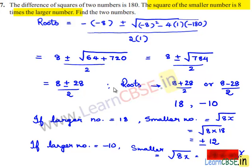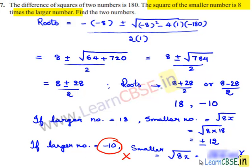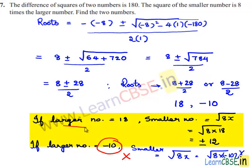Therefore, we must not take the larger number as minus 10, because the smaller number does not exist for the larger number minus 10. Hence, the larger number is 18 and the smaller number is plus or minus 12.